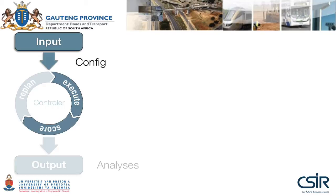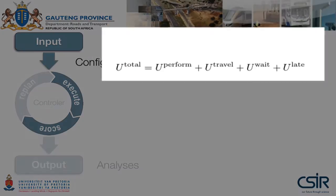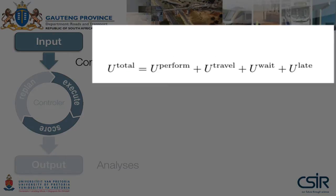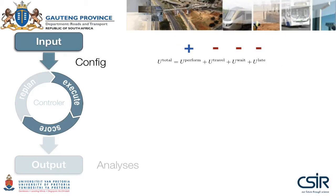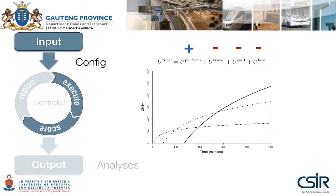Once the simulation is done, each agent scores their executed plan, and this score is often different from the expected score. The score is expressed in terms of utility, and the total utility earned is the sum of all the components. An agent earns positive utility for performing an activity, negative utility for traveling, negative utility for waiting such as arriving too early when a facility is not open yet, and negative utility for leaving early or arriving late at work. Each activity type has its own log function with decreasing marginal utility. Here's an analogy — if you spend an hour shopping, you get X amount of utility; spending two hours does not mean you get two X units of utility, rather something like 1.8.